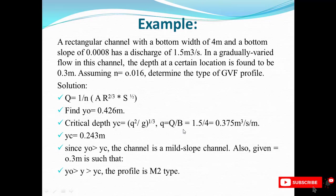In the example, to determine the type of gradually varied flow profile, the discharge is given. First, find y₀ using Manning's equation: Q = (1/n) × A × R^(2/3) × S₀^(1/2). Then calculate the critical depth yc, which for a rectangular channel equals the cube root of (q² / g), where q = Q/b. With b given, y is found to be 0.243 m. Since y₀ is greater than yc, it is a mild type, and since y lies between y₀ and yc, it is a type M2 profile.